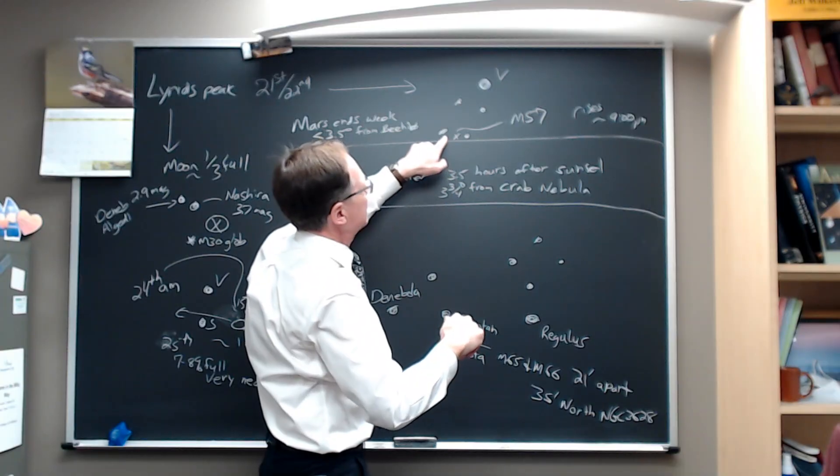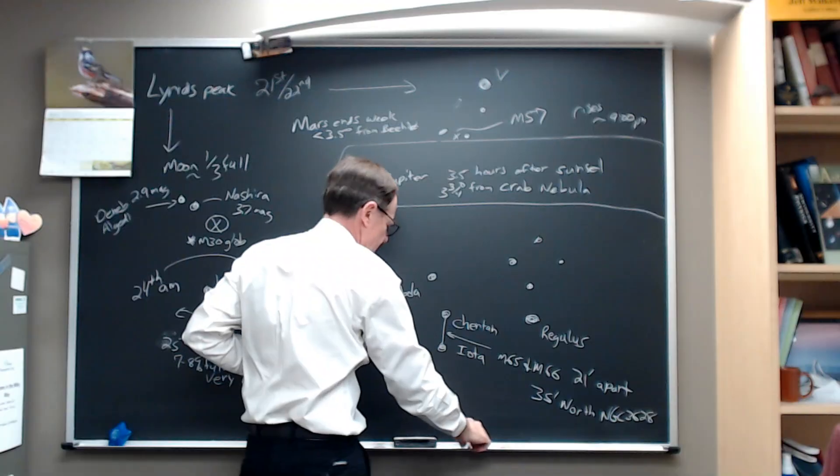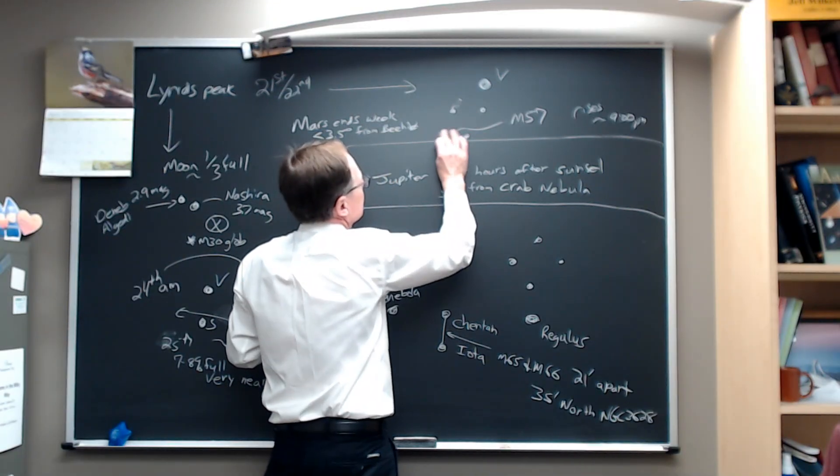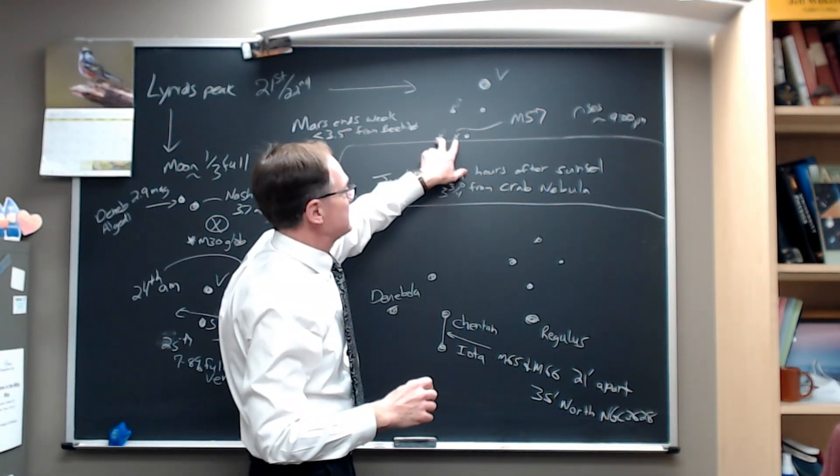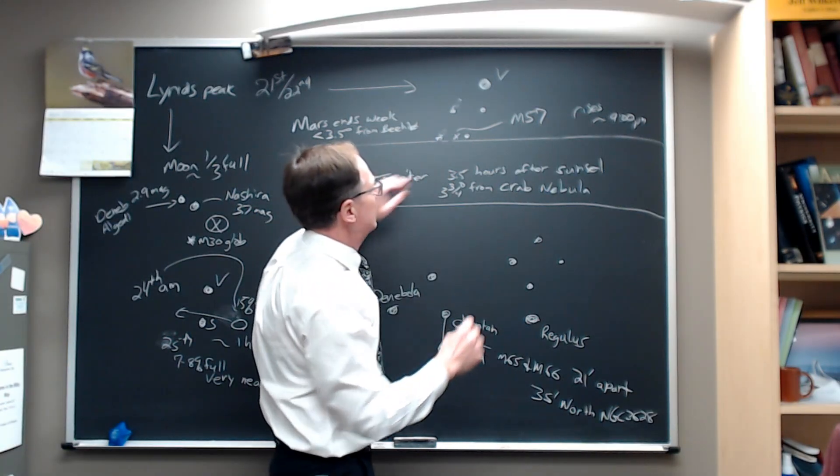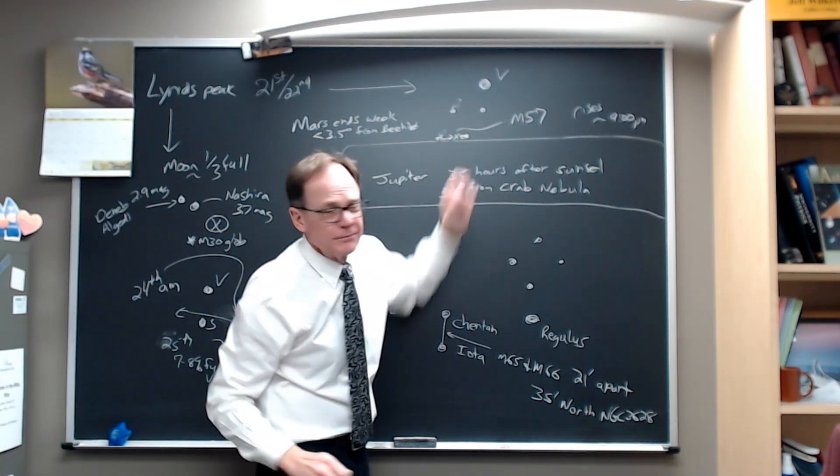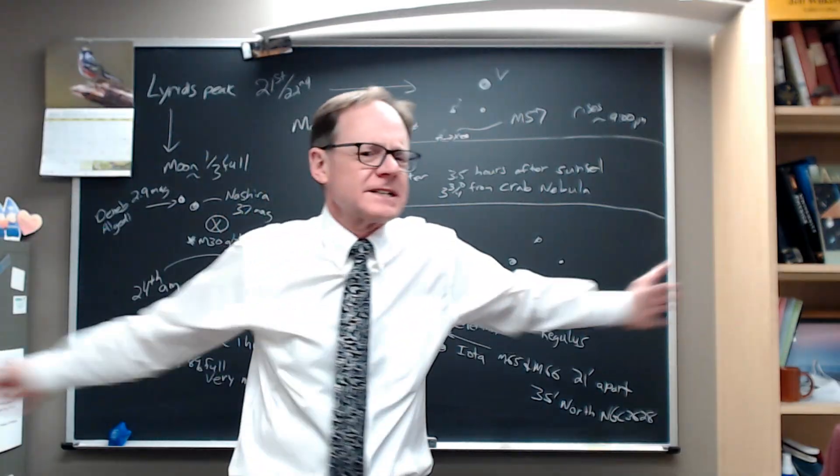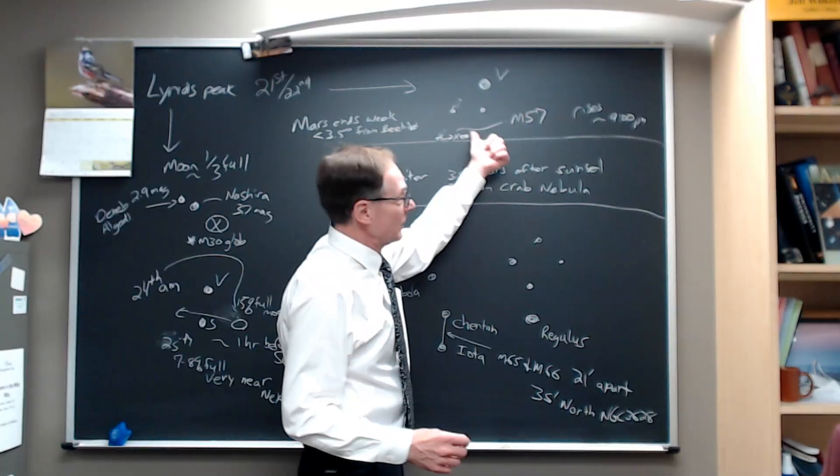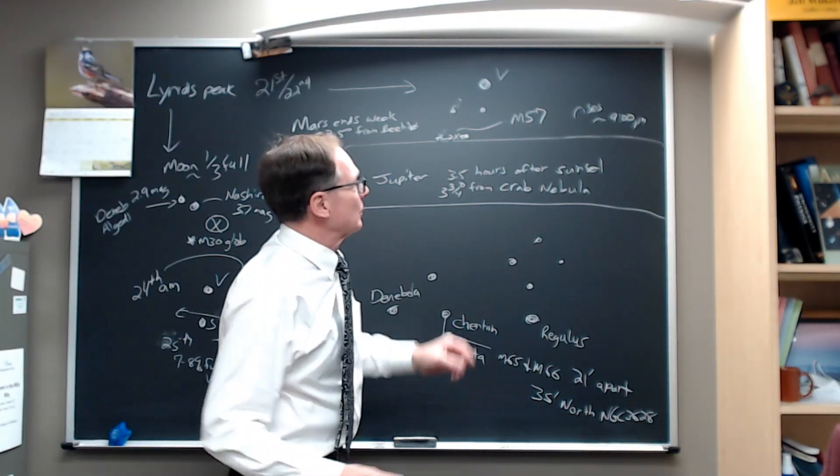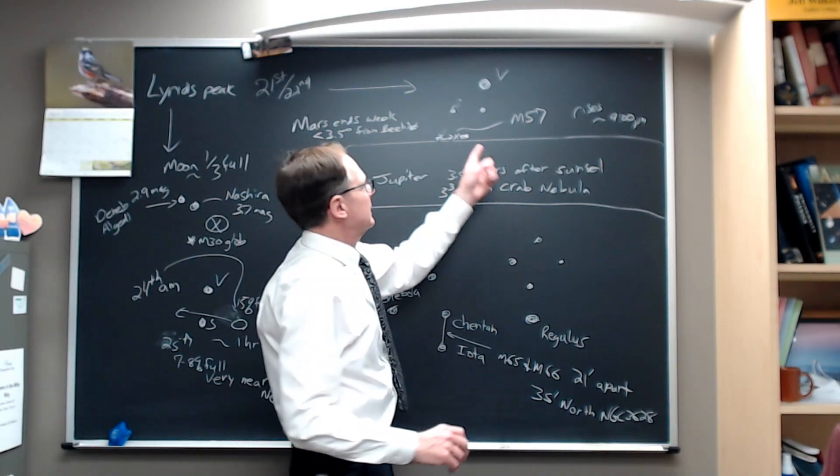And about a third of the way between the two bottom stars, the two southernmost stars in the parallelogram that you have right there, about a third of the way this direction, two thirds of the way over that way, right on the line, is M57. We've talked about that before. The best example of a planetary nebula you're going to find in the northern sky. The Ring Nebula, it's called. And so you've got the Ring Nebula there. Take advantage of the fact that we've got little moon this week to go out and enjoy that, to find that.